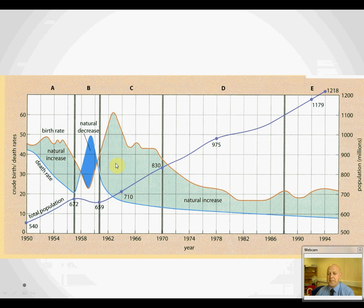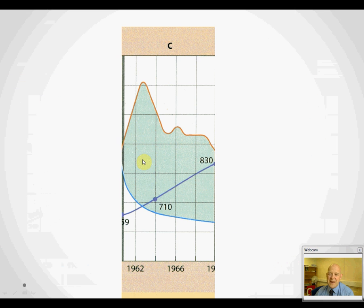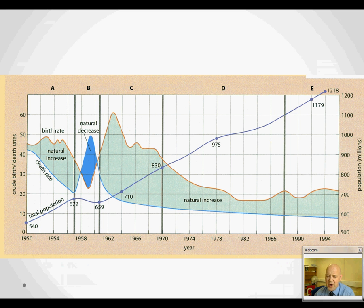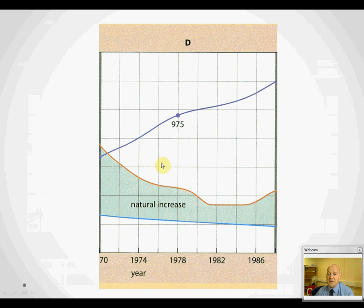In stage C, we had the 1960s. Unfortunately, just when the Chinese needed to get their birth rate down, they had the Cultural Revolution. Everything Western was rejected, because the idea of industrialization was linked to the Great Famine, and therefore anything Western was seen as wrong. From the 1960s to the 1970s, anything Western — such as birth control — was not welcomed. During that period, China's population rocketed.